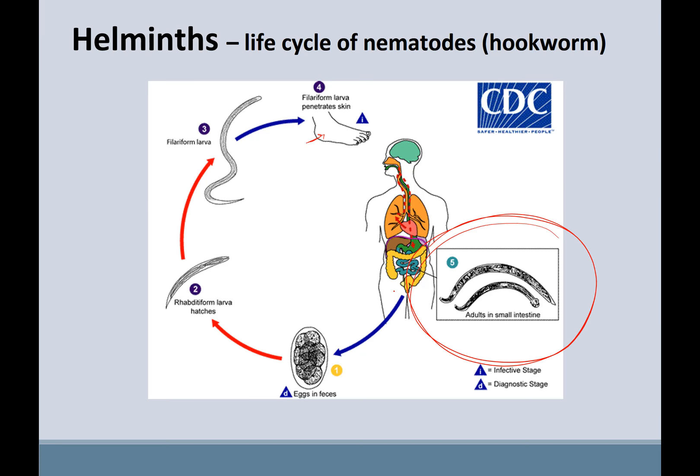Most worms live in our intestines, but interestingly many go through the lungs first. For instance, this filariform larva penetrates the skin, then reaches the lungs, so that you cough it up and swallow it — and then it gets into your intestines. It's a very interesting pathway to reach the right part of the host, where it can produce eggs that are then passed out with feces into the environment.